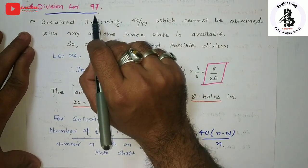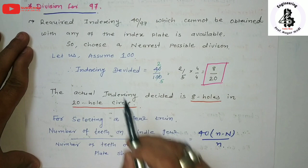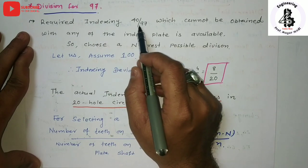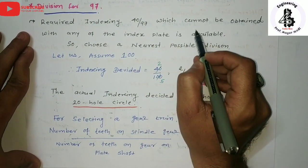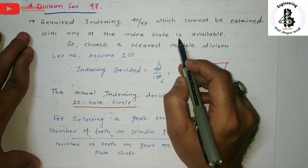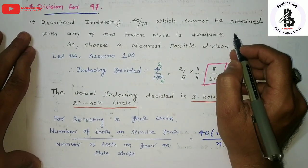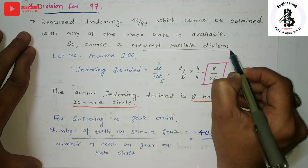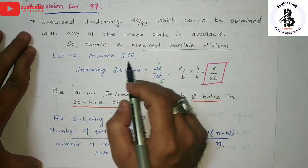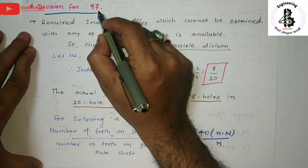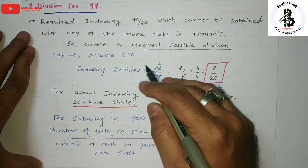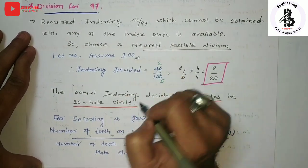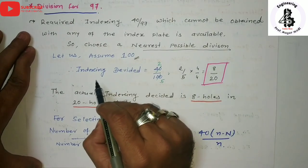Let us see the calculation for differential indexing for 97 teeth. Starting with simple indexing: the required indexing is 40 divided by 97, which cannot be obtained by any index plate available in the workshop. At that time, choose the nearest possible division — either less than 97 or greater than 97. In this case we assume 100 as the number of divisions.